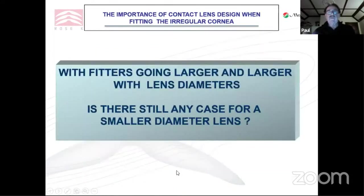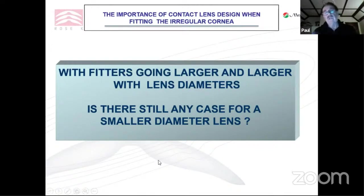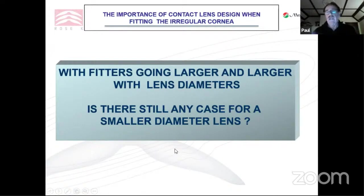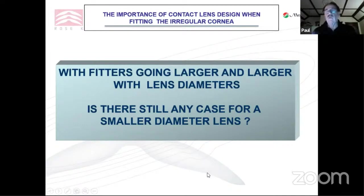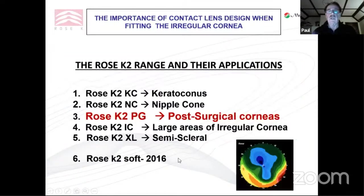You might say fitters are going larger and larger, and at American conferences all they talk about is scleral lenses. But I don't see why you should cover up the whole cornea when you've only got a small section like a nipple cone — a very small percentage of the cornea — that needs correction. I will always still try a corneal lens before going to a larger semi-scleral design.